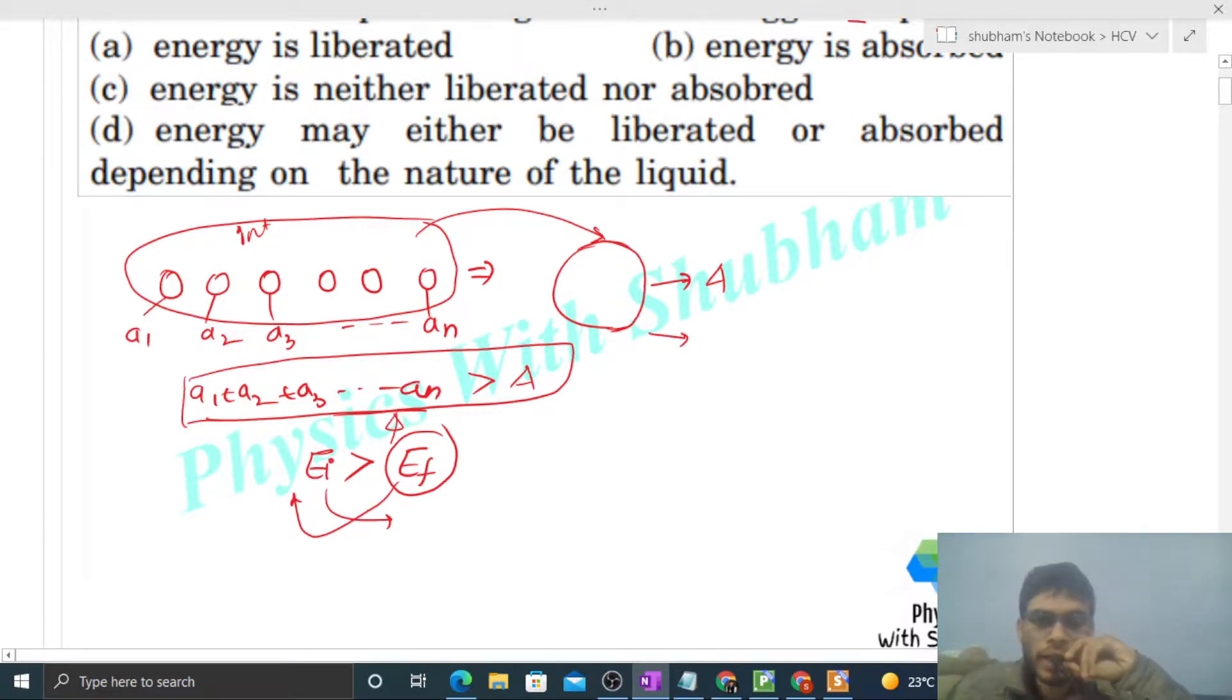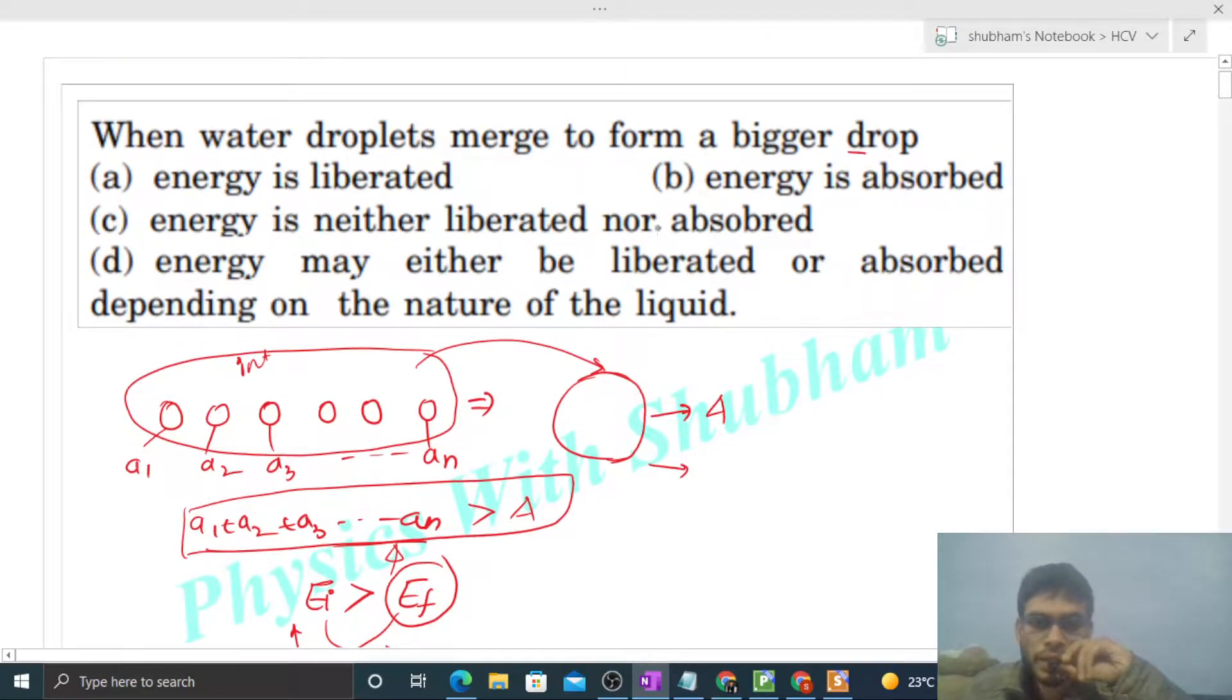Now this energy that is liberated or released into the atmosphere, in what form will it be? Maybe in the form of heat. So in that case, we can say, let's say the initial temperature is Ti and the final temperature of this liquid drop is Tf.